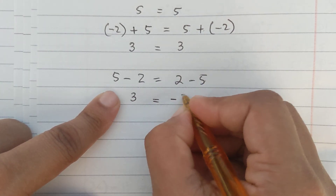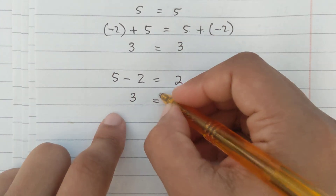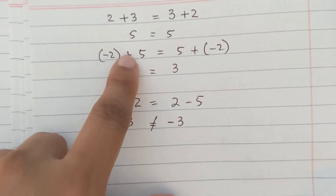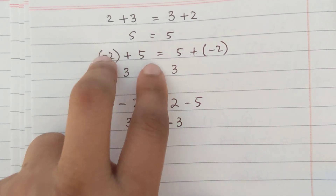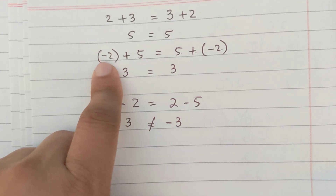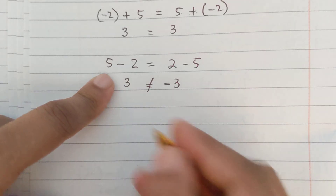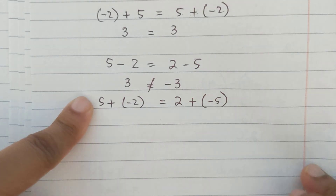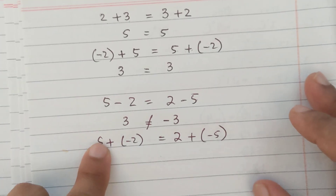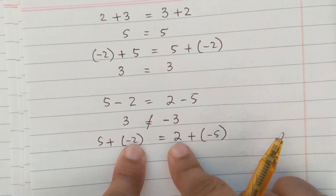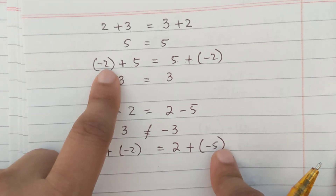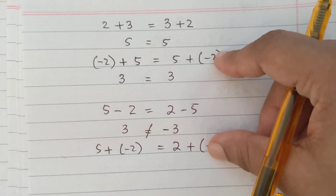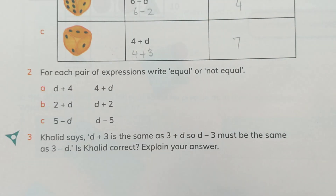Don't get confused between these two situations. Here we have an addition sign between two different numbers — we are adding a positive and a negative number. For example, 5 plus minus 2 equals 2 plus minus 5 — this works because we are adding the same numbers in different orders. In contrast, 5 minus 2 and 2 minus 5 involve subtraction and are different situations, so the commutative law applies accordingly.